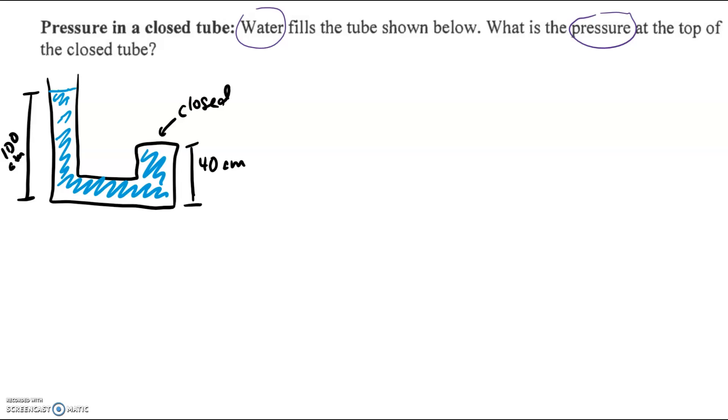So you might think, all right, so we're trying to calculate pressure. We know two formulas for pressure. Pressure is force over area, and we know that pressure is P naught plus rho GH, hydrostatic pressure formula.